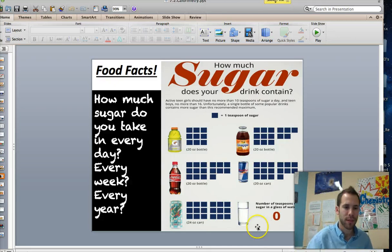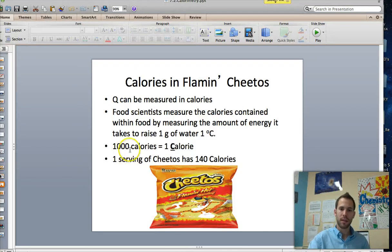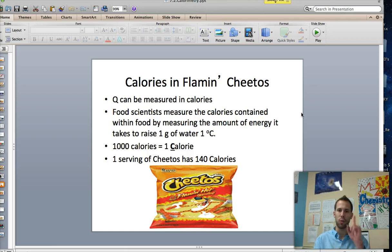Now that I feel refreshed, I'll give you guys an opportunity to check out some of the calories in Flamin' Hot Cheetos. Sometimes we measure Q in calories. And when we do that, we use water as our medium. So food scientists measure the calories contained within food by measuring the amount of energy it takes to raise one gram of water one degree Celsius. And water specific heat is 4.184 joules per gram Kelvin.